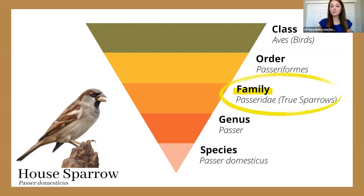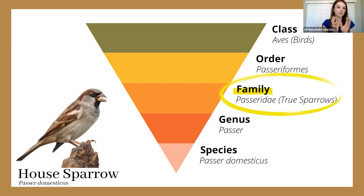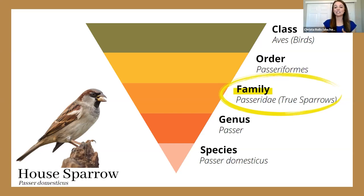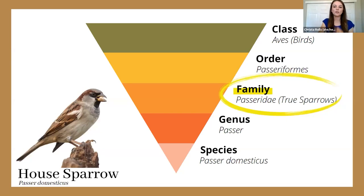Now we're going to get more specific and continue the narrowing-down process. We've separated passerines from non-passerines based on foot shape and general size. But how can we narrow it down even further? Getting to the family level — figuring out the general group a bird belongs to — can be really helpful in identifying a bird's species. Let's go into family a bit deeper.